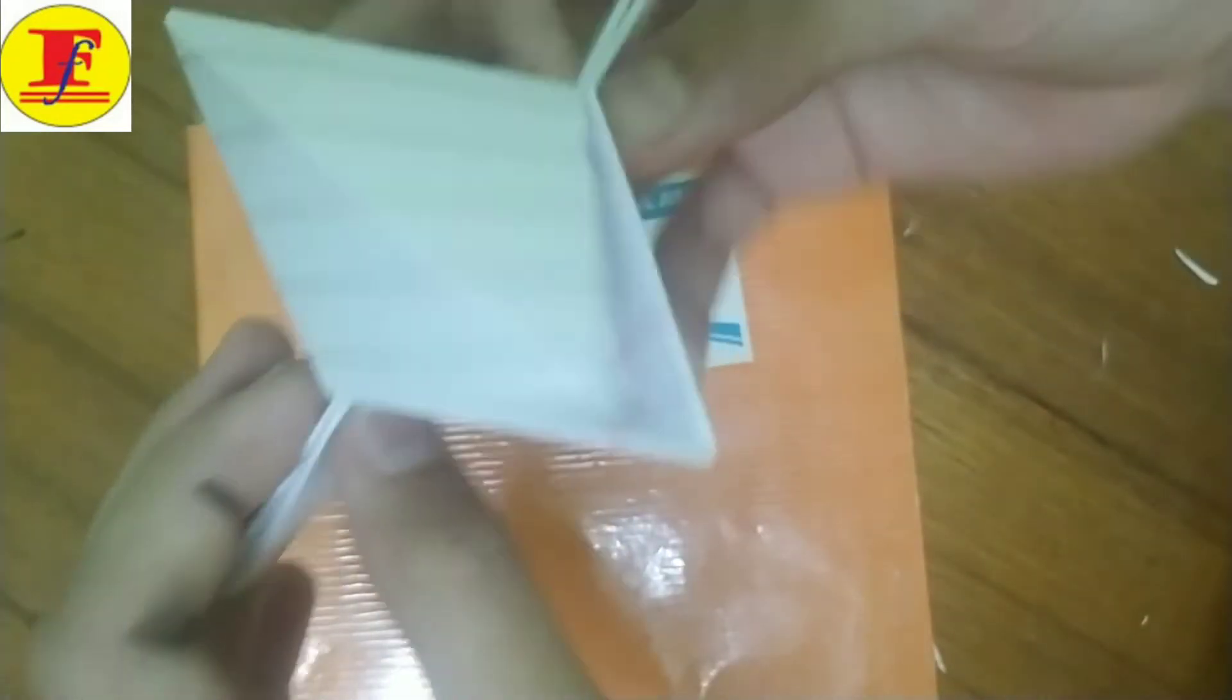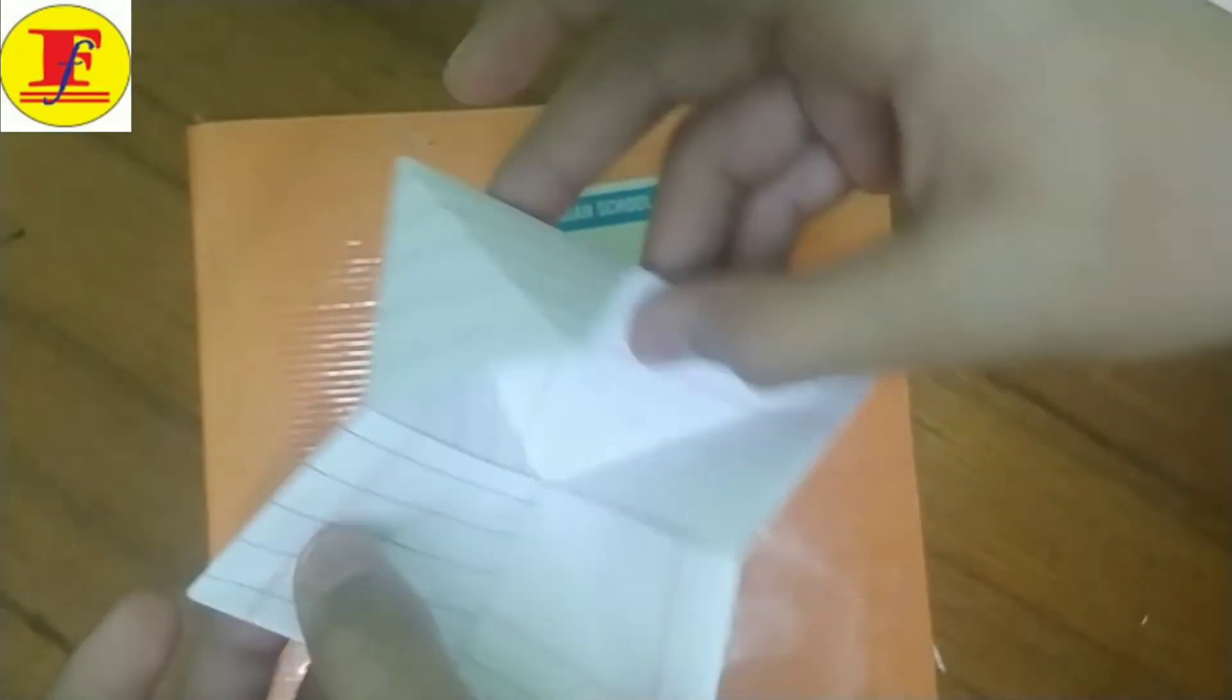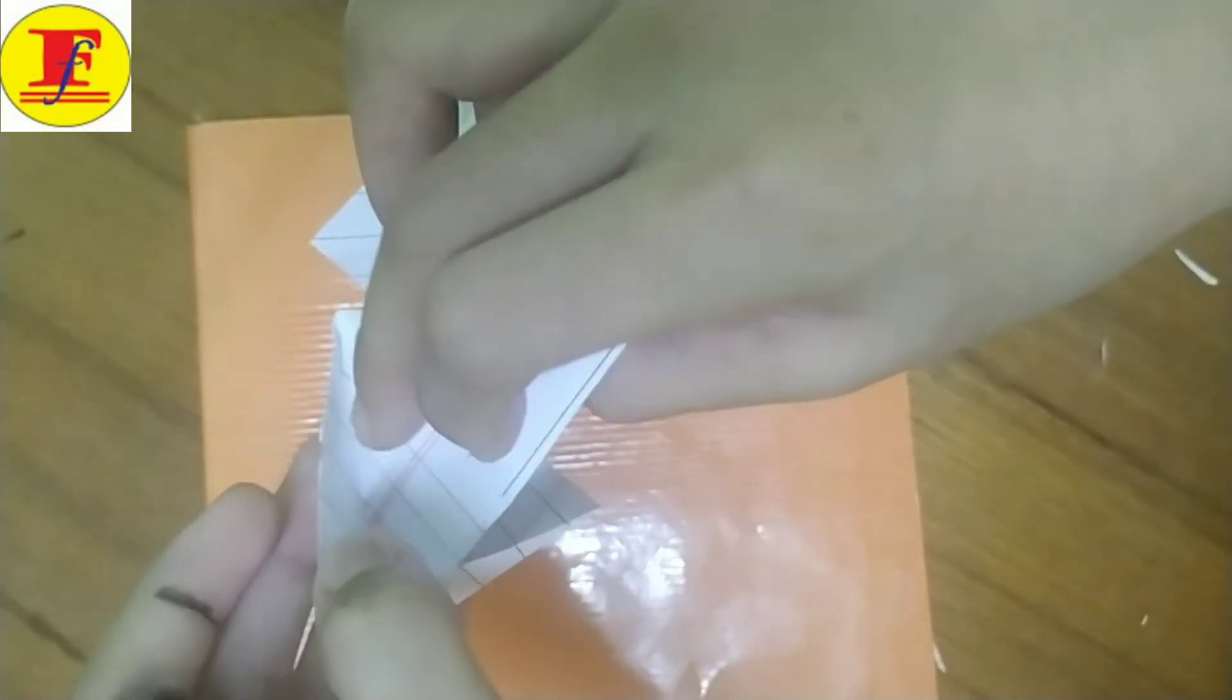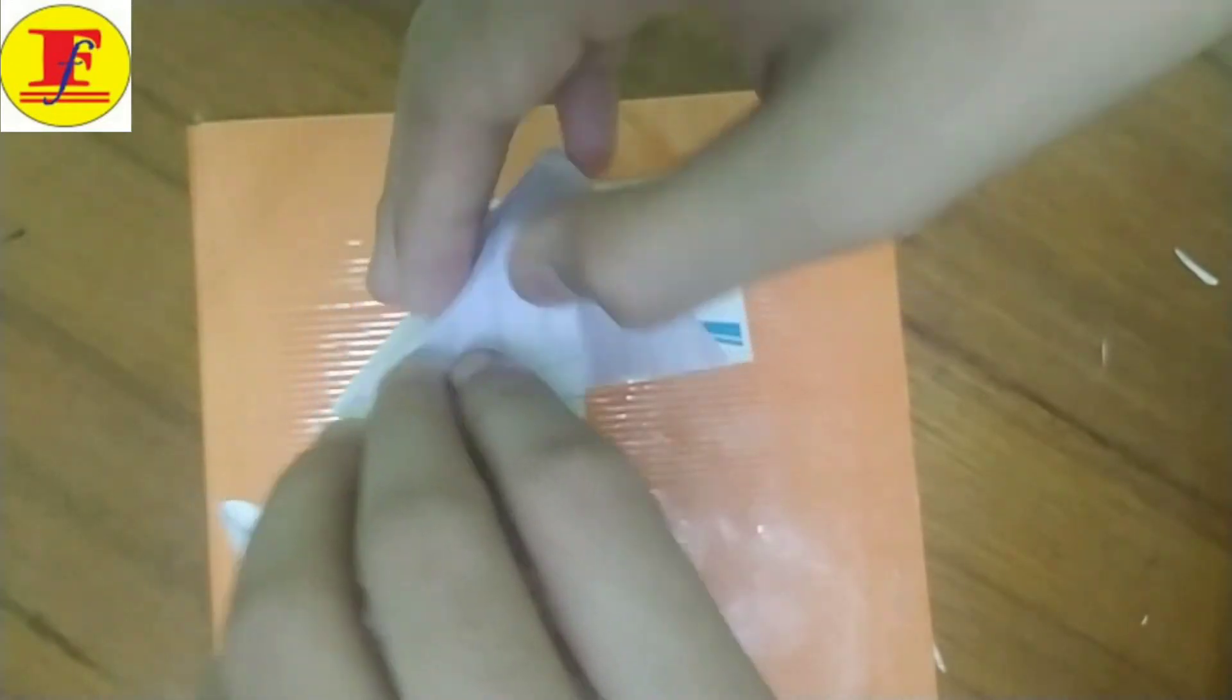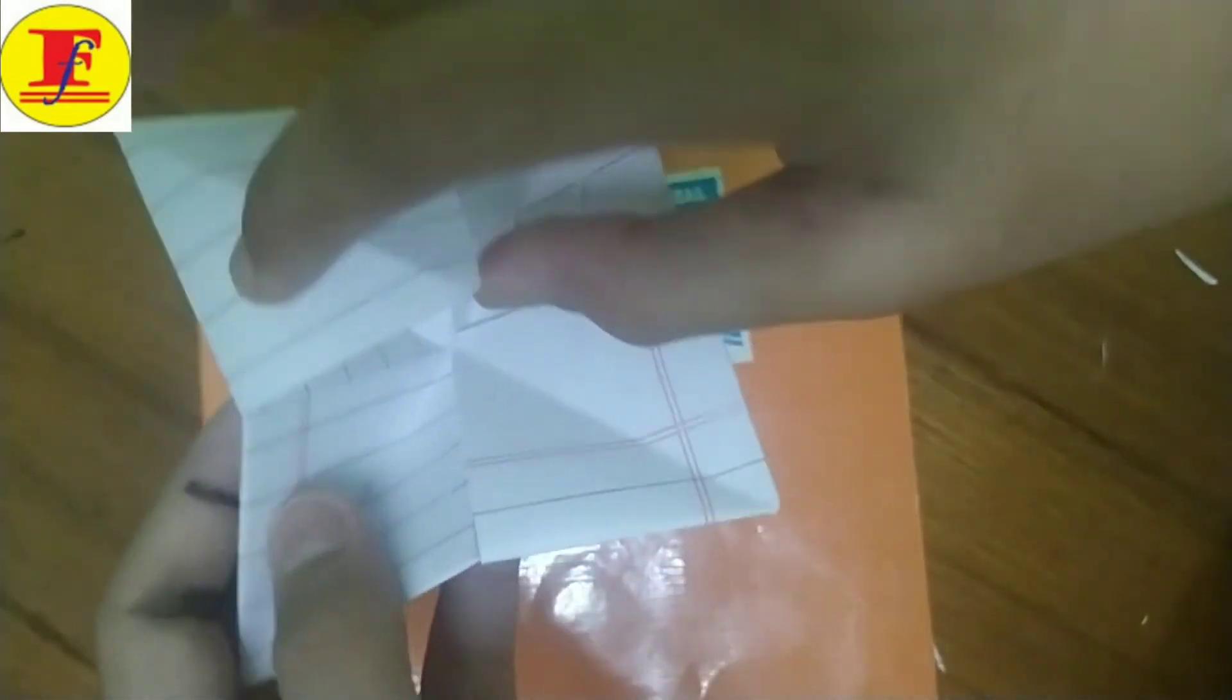So now only thing is left to glue these sides. From here, here, and from here. And here. And draw his eyes. And your bird is being made. And it can talk and eat. I will show you how it eats.